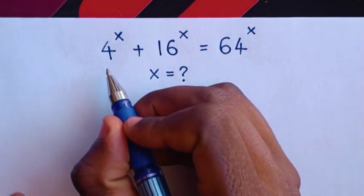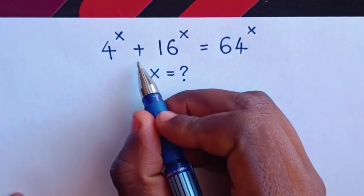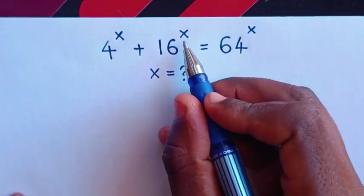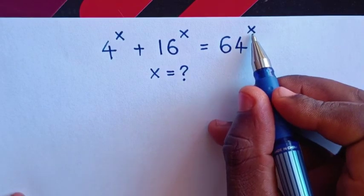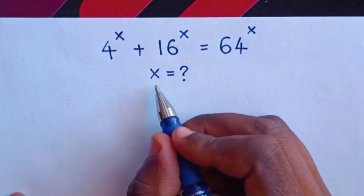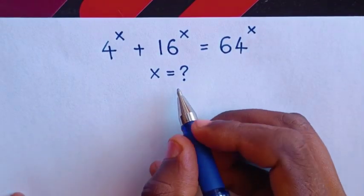Hello. How to solve: 4^x + 16^x = 64^x, to find the value of x.